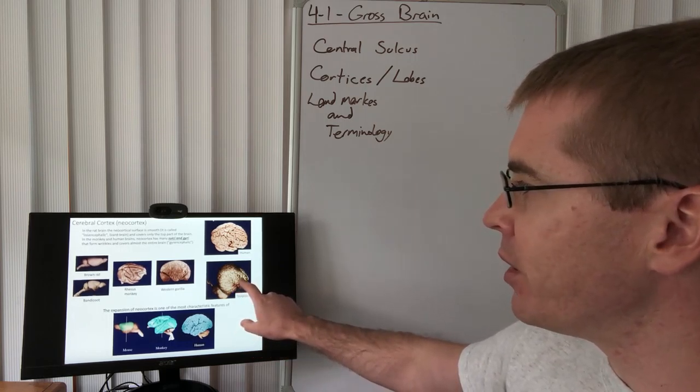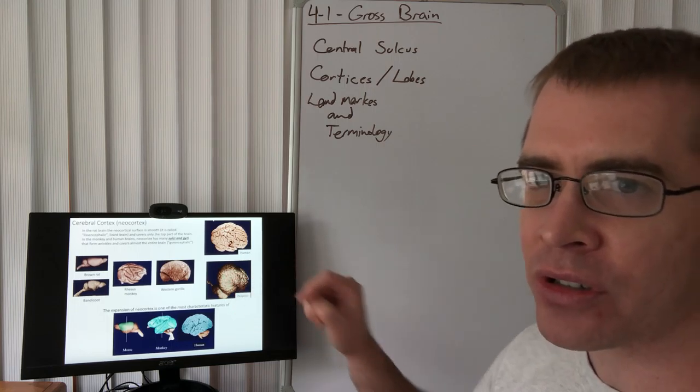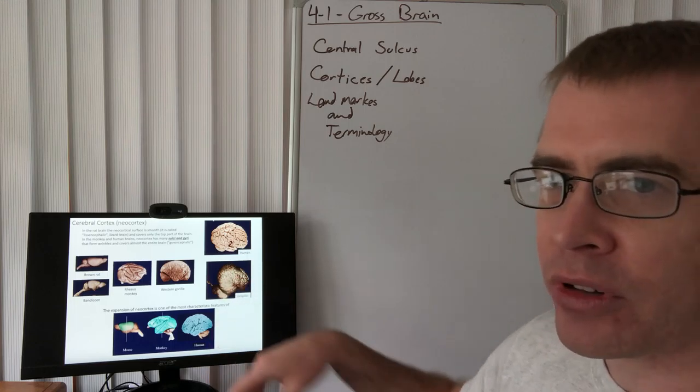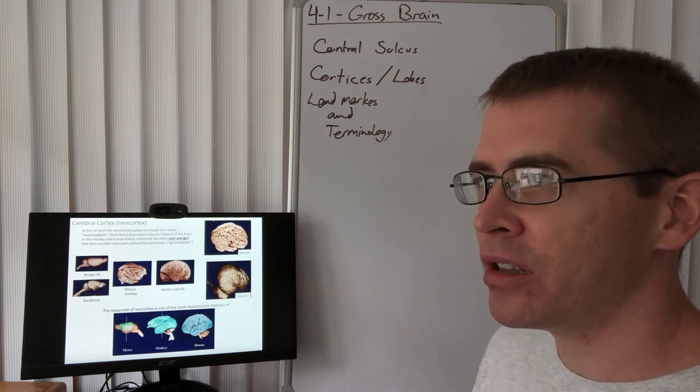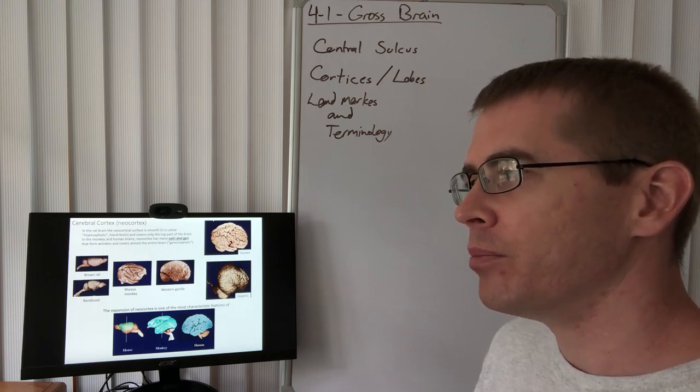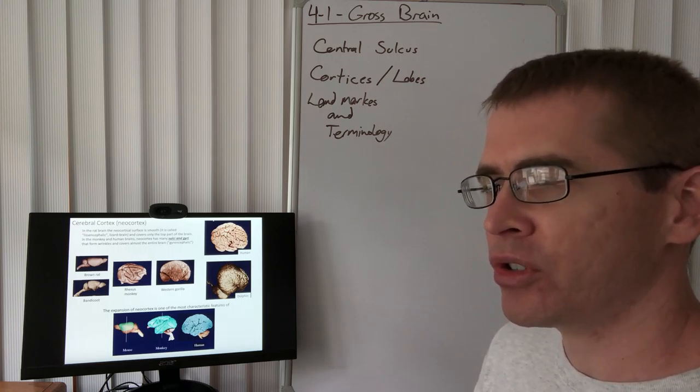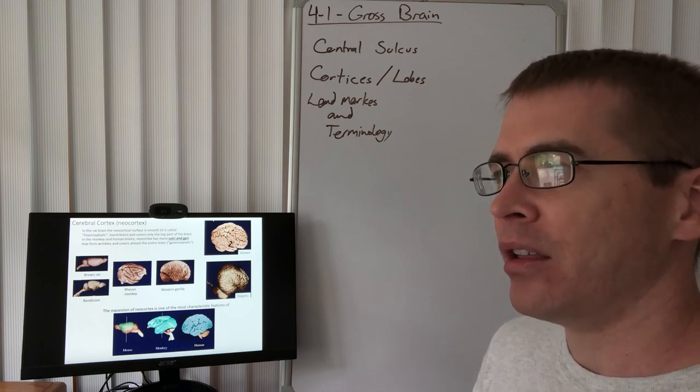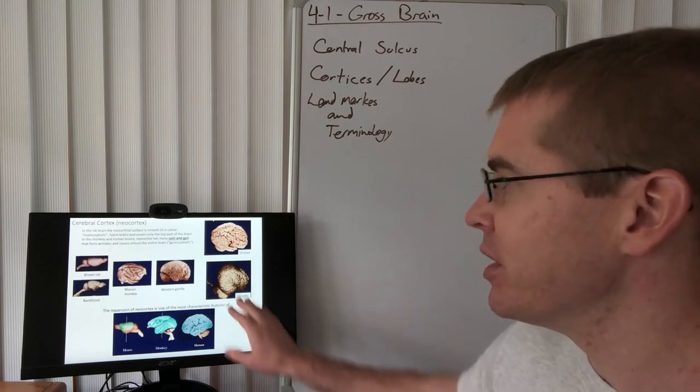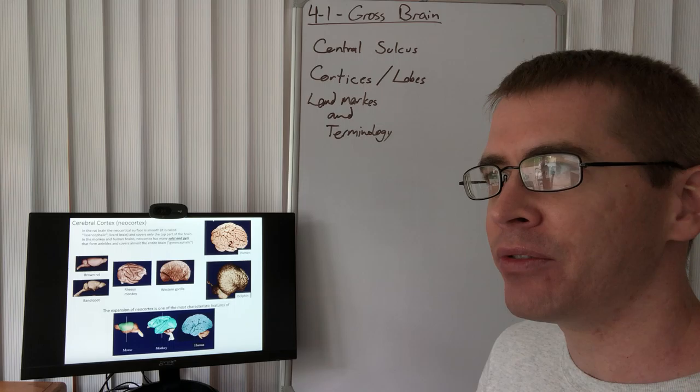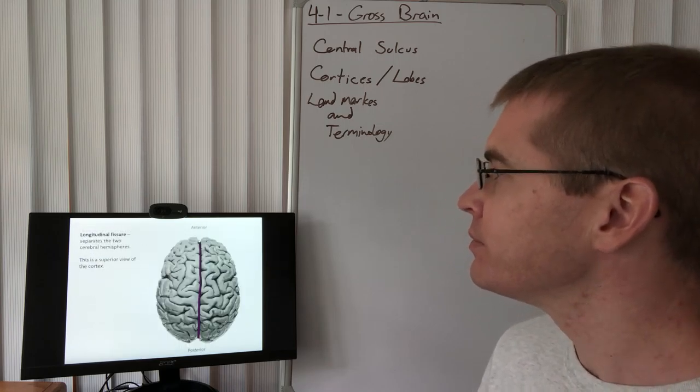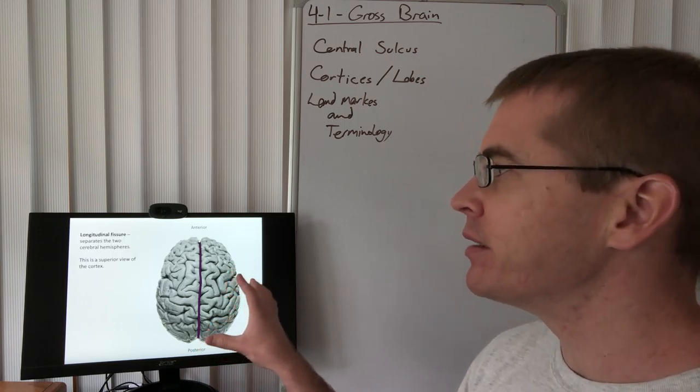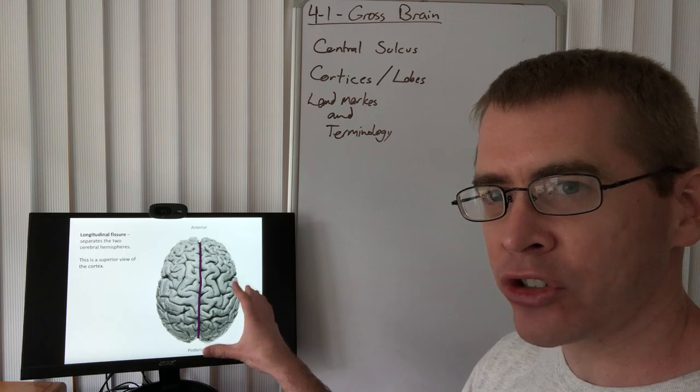In fact, a lot of the extra gyrencephalic features of the dolphin brain occur around the insular cortex and the temporal area. Those regions in the human are related to internal senses of the internal, functional, and emotional state of the body, which are related to socialization. So perhaps dolphins have a very highly developed social sense as a result. But at any rate, let's start looking at our human brains now and start assigning names to some of these features that we see.